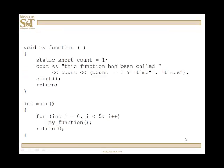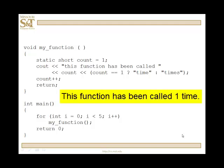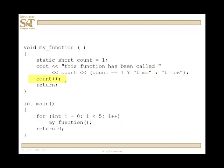The first example here is kind of contrived. We have a static short that is initialized to one. So, it's created and initialized to one on the first execution of the function. And we have an output statement that says this function has been called count time or times. The first execution will say this function has been called one time. Notice then that the last statement is count plus plus, so our count is incremented.